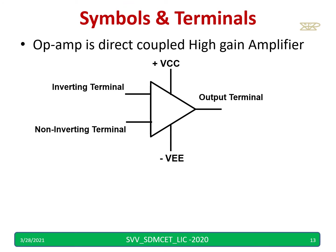The op amp symbol shows the inverting terminal, non-inverting terminal, plus Vcc, minus V, and the output terminal. You should remember the pin numbers — pin two is inverting, pin three is non-inverting, pin seven is plus Vcc, pin four is minus V, and pin six is the output. Try to recall these a few times.